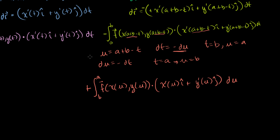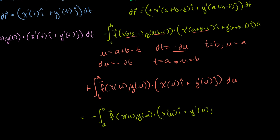Now these two integrals look similar but not yet equal — the limits of integration are reversed. Reversing the limits introduces another negative sign, so we get: minus the integral from a to b of f(x(u), y(u)) dot [x′(u)i + y′(u)j] du. This definite integral is identical to the forward integral — just with variable u instead of t — so they give the same number. Therefore the reverse curve integral equals the negative of the forward curve integral.